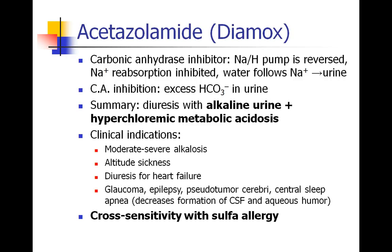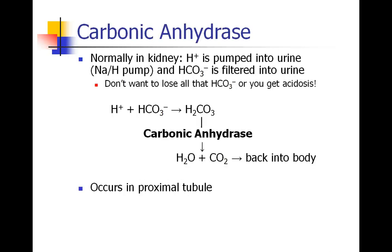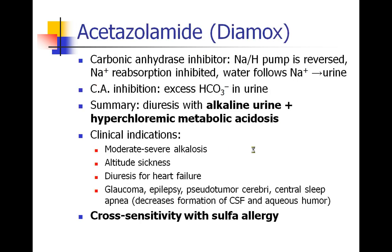Carbonic anhydrase inhibitors — most commonly acetazolamide, known as Diamox — work by inhibiting this reaction. When we inhibit carbonic anhydrase, there's a buildup of hydrogen ions pumped into the urine, which actually reverses the sodium-hydrogen pump. We have so much hydrogen buildup that hydrogen leaves the urine and sodium comes into the urine. As we know, when sodium is in the urine, water follows it, and this makes a diuretic effect.